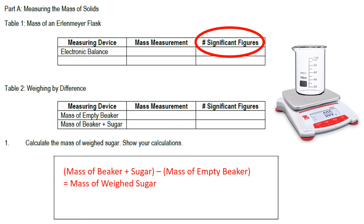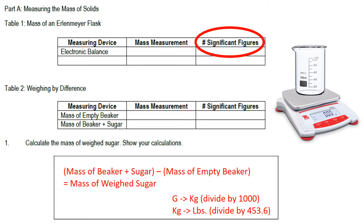Next is the weighing by difference section. You measure the mass of the empty beaker, then the mass of the beaker plus sugar, record both, and determine the significant figures. To calculate the mass of the weighed sugar, subtract the mass of the empty beaker from the mass of the beaker plus sugar. They sometimes also ask you to convert the obtained mass from grams to kilograms — to do that, divide by 1000. They may also ask you to convert from kg to lbs, for which you divide by 453.6.